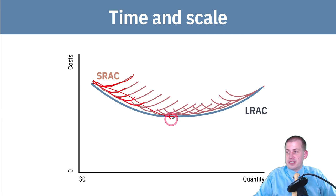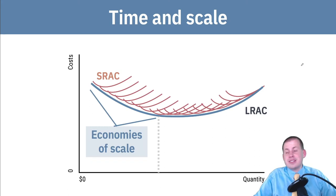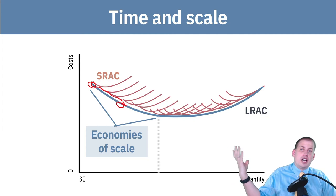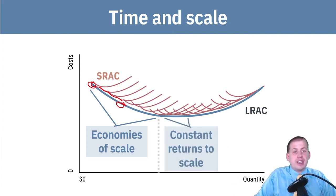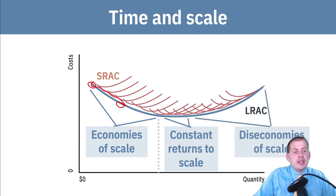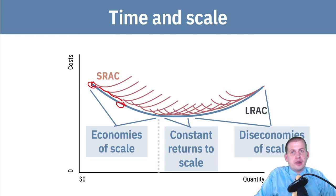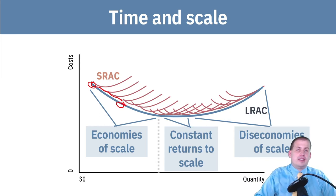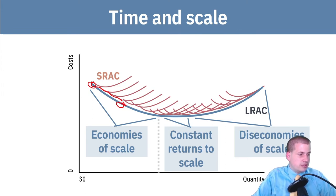Eventually you'll get to a point where it's just going to be super expensive to keep getting bigger and bigger. Anytime you're increasing the stuff you're making and it gets cheaper to make that stuff, that is called economies of scale. Right where it's flat, you have constant returns to scale — if you double inputs, you get exactly double the outputs. And as costs start increasing as you're making stuff, you get diseconomies of scale, where doubling the amount of chocolate milk actually costs more than double to produce.